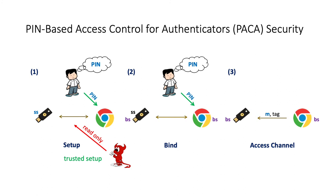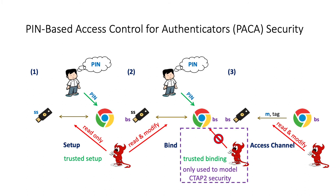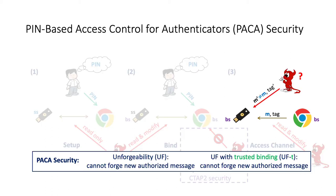For security, we first assume the setup phase to be trusted, because a brand new token can be set up by anyone. This means we assume the token and client communicate over an authenticated channel — the adversary can only read but not modify the communication — but the adversary can manipulate communication in other phases. We also consider a weaker version of our security model to capture the security guaranteed by CTAP2. In this weaker model, we do not allow the adversary to actively attack the client that inputs the user's PIN — this is essentially assumed by the CTAP2 protocol because it uses an unauthenticated Diffie-Hellman key exchange in the binding phase. We call this assumption trusted binding. For our PAKA security goals, we define a security notion called unforgeability, or UF, to guarantee that the adversary cannot forge new authorized messages to the token — replay tags are okay, but the adversary should not be able to create a valid tag for a new message that has never been sent on the established access channel.